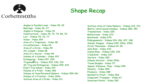Trigonometry: SOH CAH TOA — sine equals opposite over hypotenuse, cosine equals adjacent over hypotenuse, tangent equals opposite over adjacent. Make sure you know how to do 3D trigonometry and Pythagoras questions — drawing out the little triangles can be useful. Exact trig values: learn them and know how to use them, including in questions involving surds.